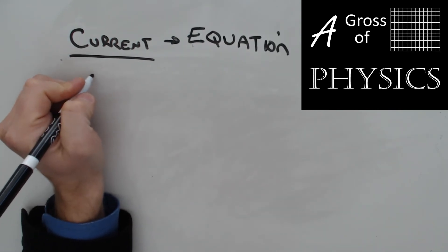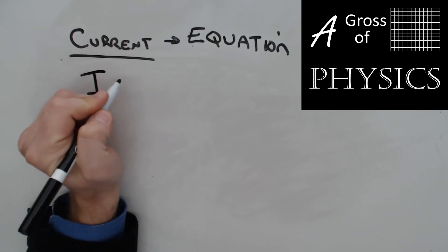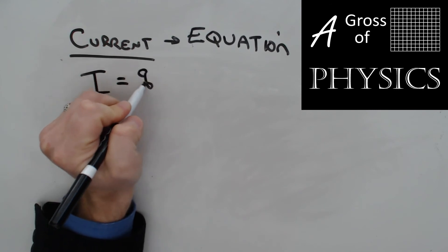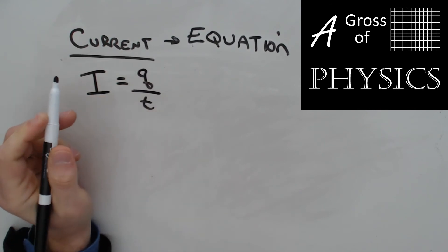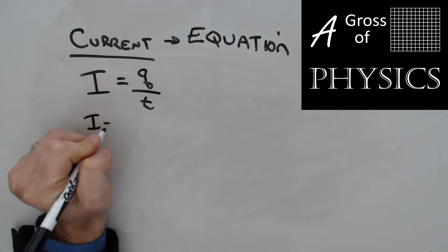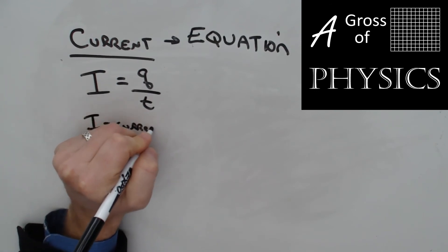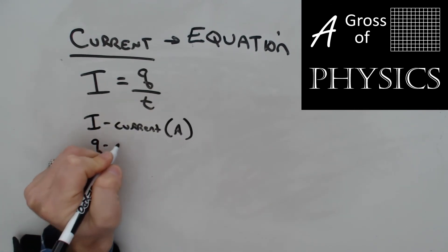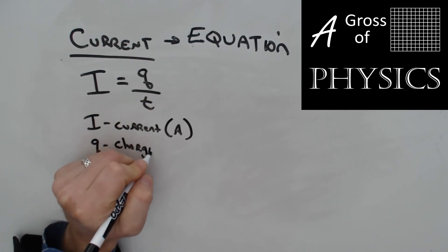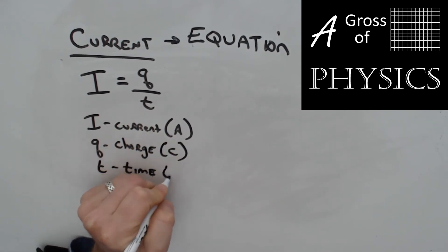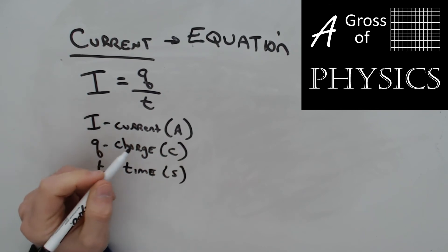Now current is defined as I. The symbol is I, and it's the rate of flow of charge. So it's Q over T. Remember, anytime there's a rate, you divide it by time. So I is current, and it's measured in amperes, capital A. Q is charge, and that is of course measured in coulombs, capital C. And T is time, measured in seconds.